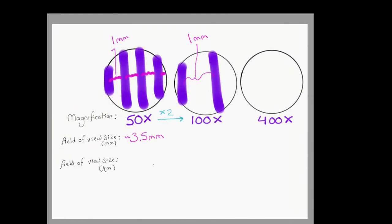We know as the magnification increases, the field of view should decrease proportionately. Because you're zooming in on a smaller area, so you're taking a closer look at a smaller area. So as our magnification doubles from 50 to 100, the field of view is divided in 2 to 1.75 millimeters.